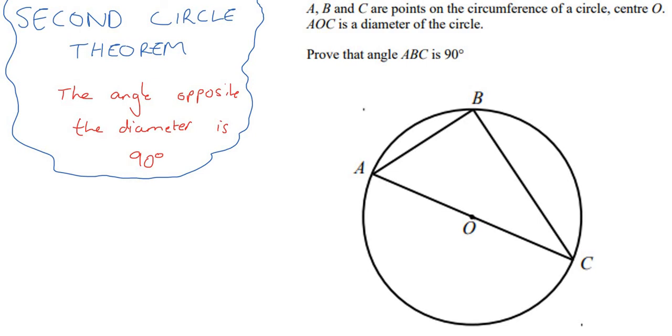So here we have our diameter AC, so I'll write that down. AC is the diameter, or as it says in the question, AOC. And the angle opposite the diameter is 90. So what it's saying is that this angle here is 90 degrees. So let's go ahead and prove this.